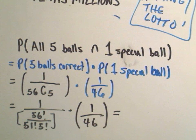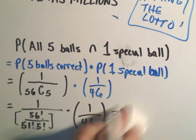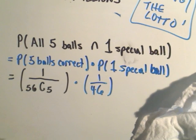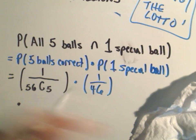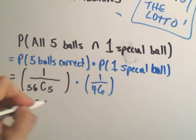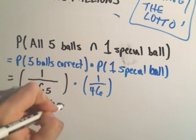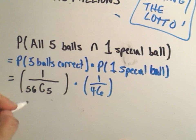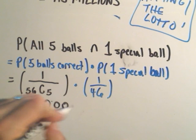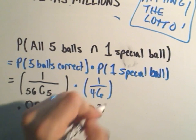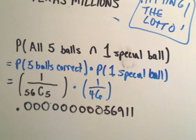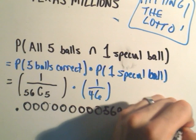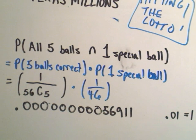It says the probability of you winning the lottery is, so let me give myself a little more space here. Let me erase this and put it right here. It says the probability of you winning the Texas lottery is .000000, let's see, 3, 6, 9, we got 9 zeros. 1, 2, 3, 4, 5, 6, 7, 8, 9, 5, 6, 9, 1, 1. And again, just as a reminder,